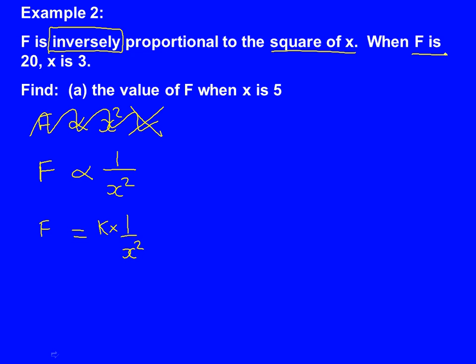To do that, we're going to use the information in the question. F is 20, x is 3. So let's substitute these in. F is 20, equals K times 1 over, but we're not going to use x is 3, because it's not just x, it's x squared. So x squared is 9, so I'm going to put 9 at the bottom there.